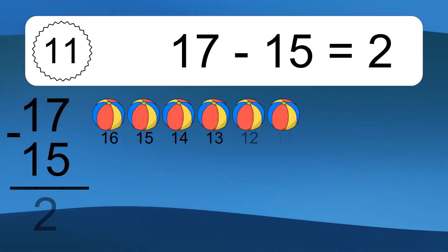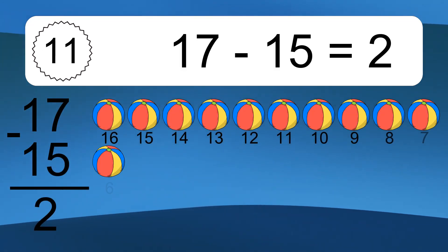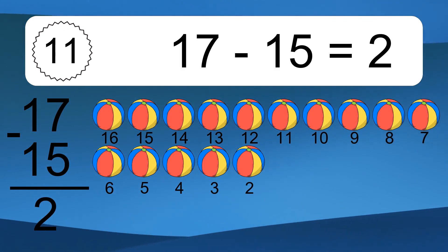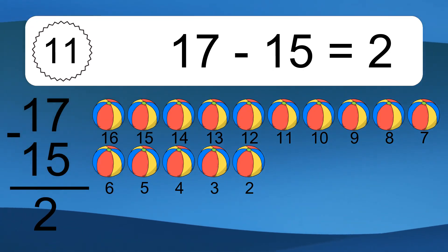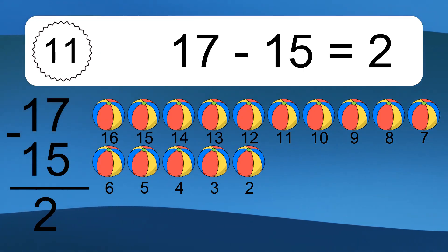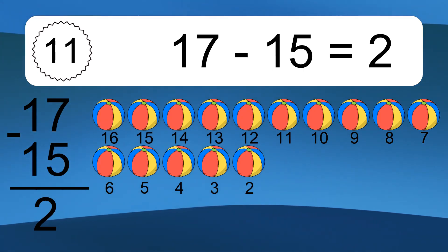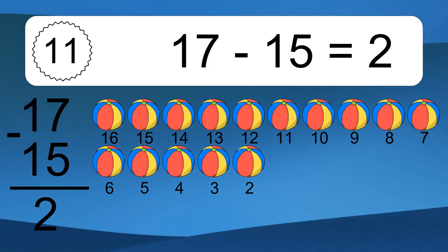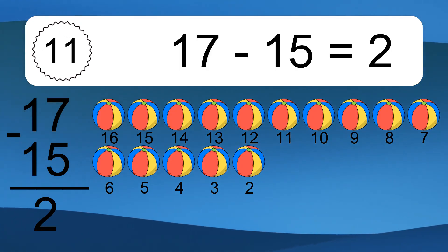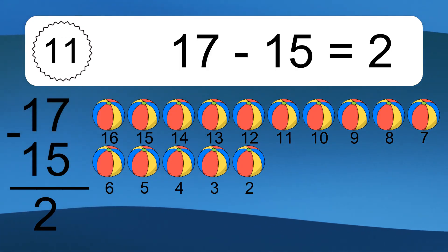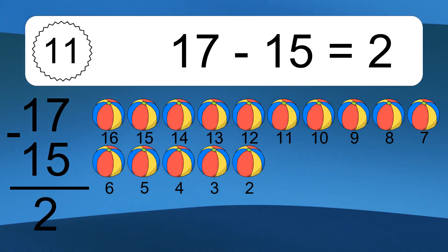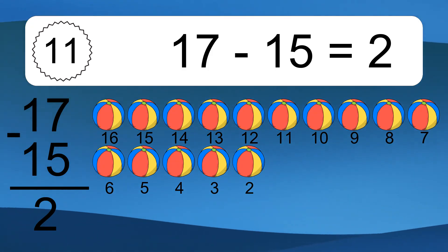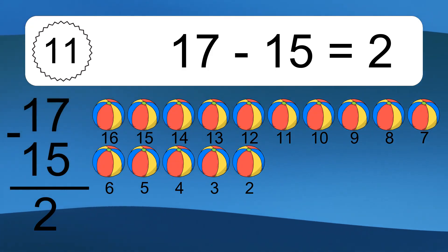17 minus 15 equals what? 17 minus 15 equals 2. Let's count it: 16, 15, 14, 13, 12, 11, 10, 9, 8, 7, 6, 5, 4, 3, 2.